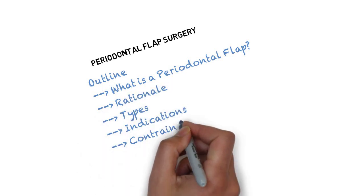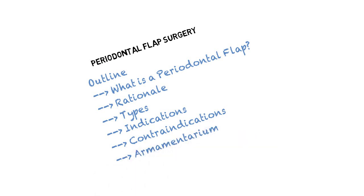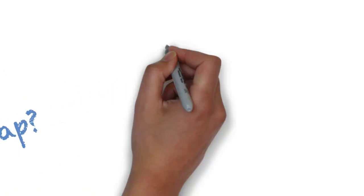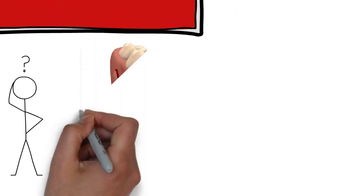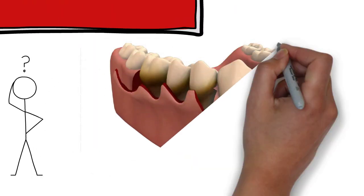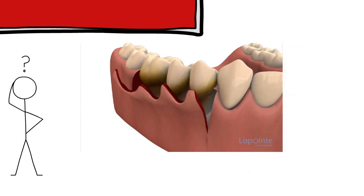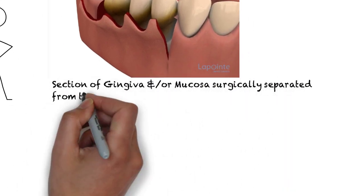So let's begin. What is a periodontal flap? By definition, it is the section of gingiva and/or mucosa that is surgically separated from the underlying bone to provide visibility and access to the underlying bone and root surface.